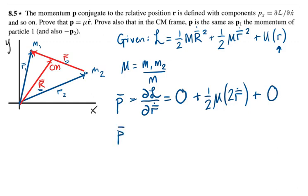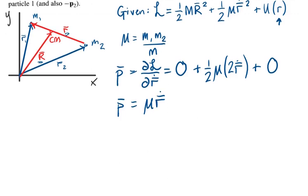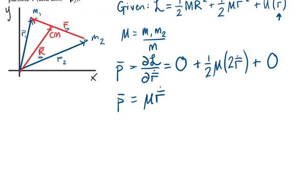So simplifying, P is equal to μṘ. That is, the momentum only depends on the change in relative position of the two masses.